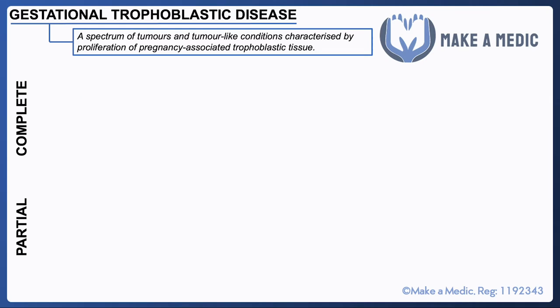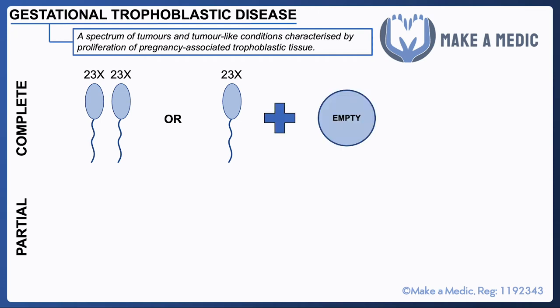A complete mole forms when two sperm or one sperm fuse with an empty egg that contains no genetic material whatsoever. When the single sperm fuses with this empty egg it duplicates its chromosomes and forms a 46-chromosome fertilized egg. The issue is that all of the genetic material within this fertilized egg is purely male, and it is this overdose of male chromosomes that leads to excessive growth.